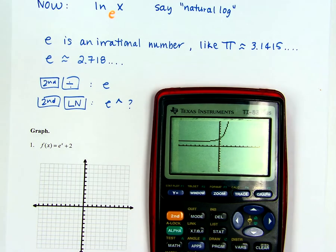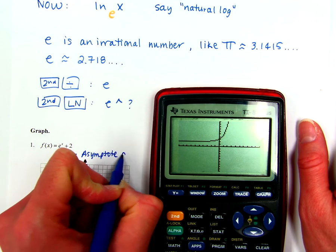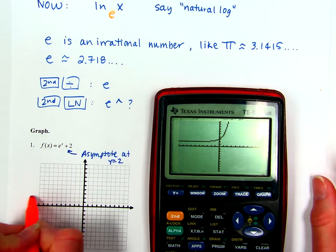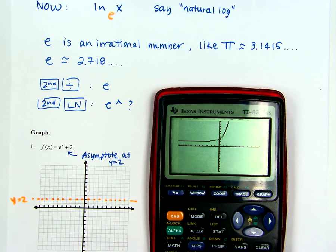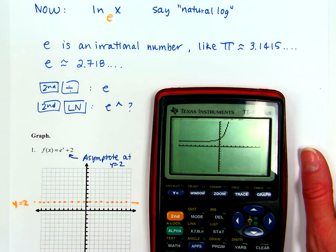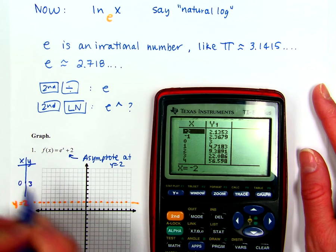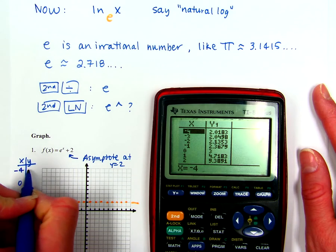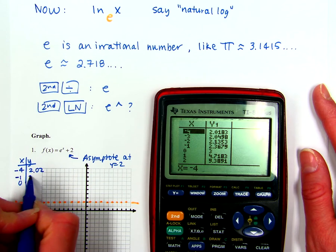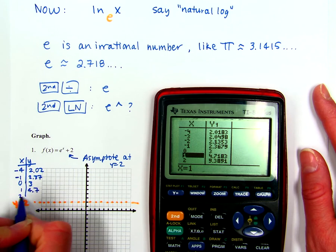Something you need to know is that you're going to have an asymptote — that's like a wall that your graph gets really, really close to but never touches. This tells me I'm going to have an asymptote at Y equals 2, which is my imaginary horizontal line. My graph is going to get really close to it but never touch it. From the table, I'll find a couple of nice points: (0, 3), (negative 4, 2.02), (negative 1, 2.37), (1, 4.7), and (2, 9.4).